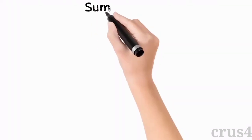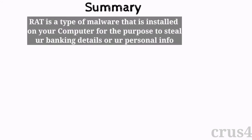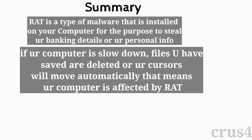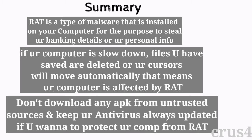Now let's take a short look at the summary of this lecture. We have learned that RAT is a type of malware installed on your computer by various means, with the purpose of stealing your bank details, your valuable files, your passwords, or your personal information. If your computer is slowed down, files are deleted, or your cursor moves automatically, that means your computer is affected by a RAT. To protect yourself, do not download any file or APK from unknown sources, and always keep your antivirus updated.